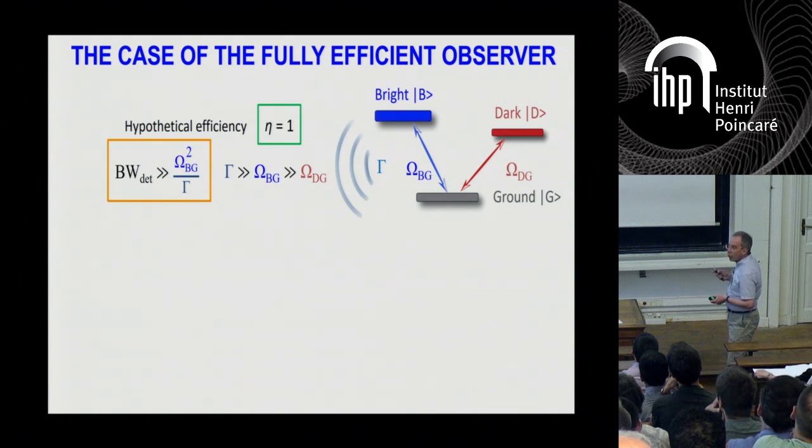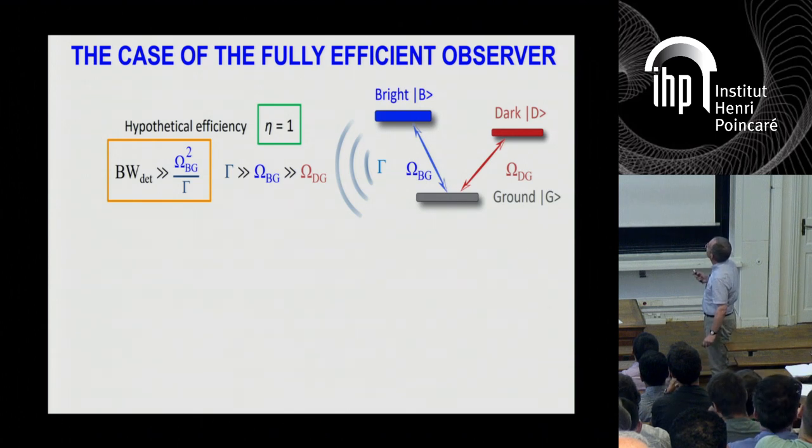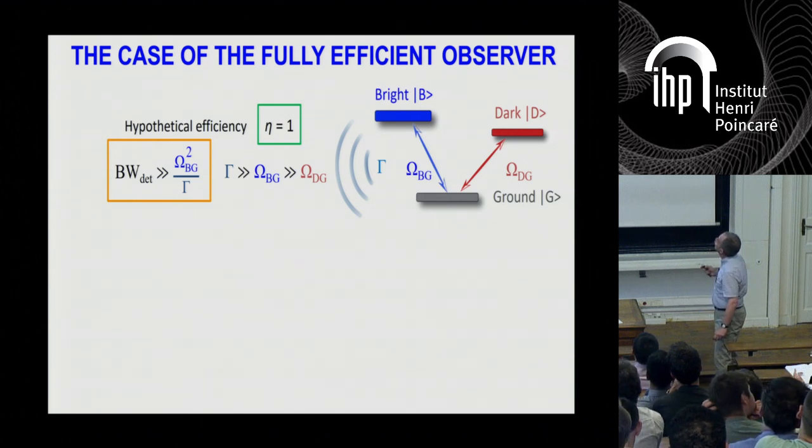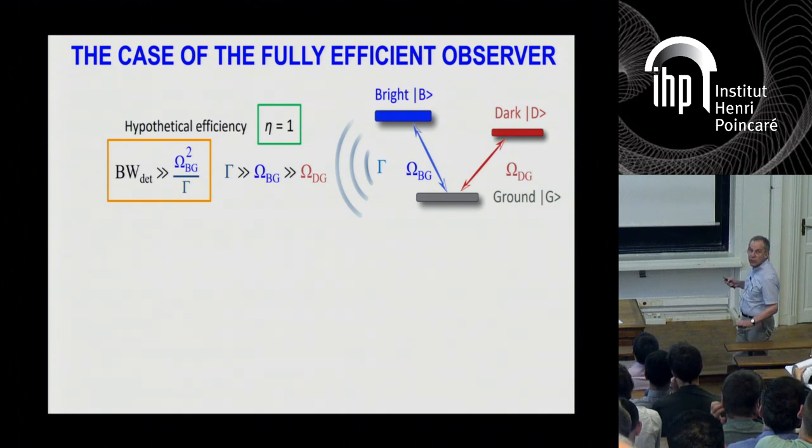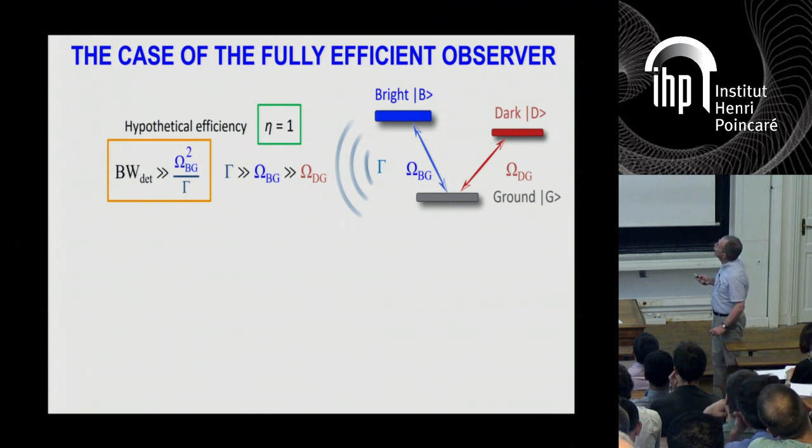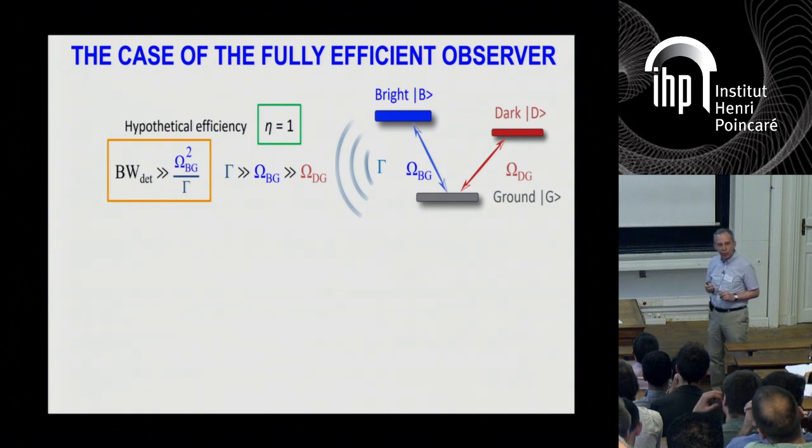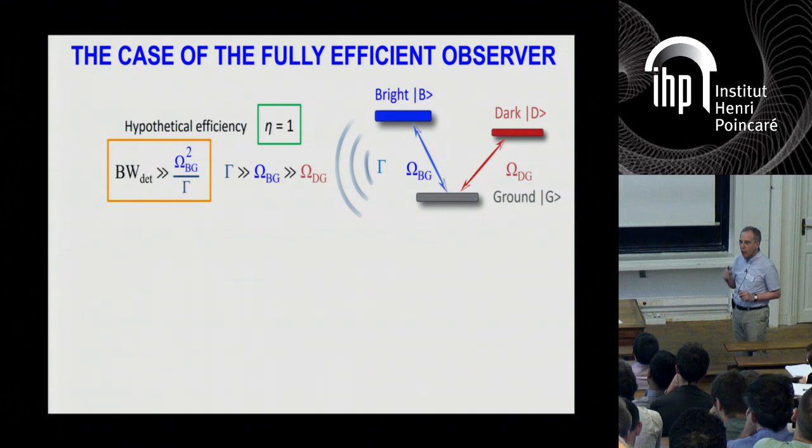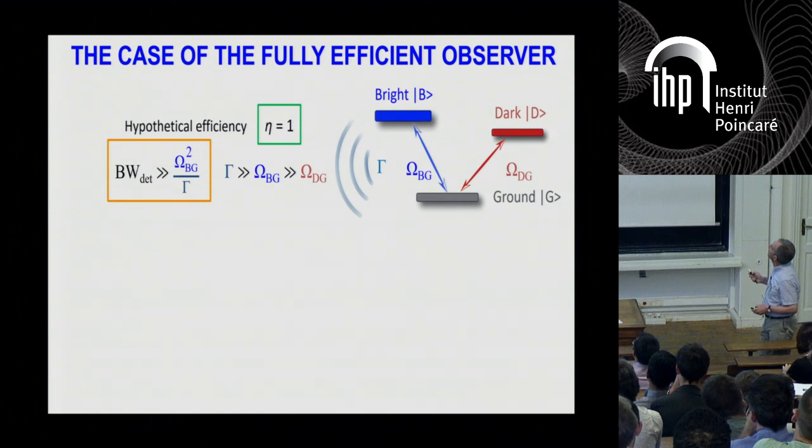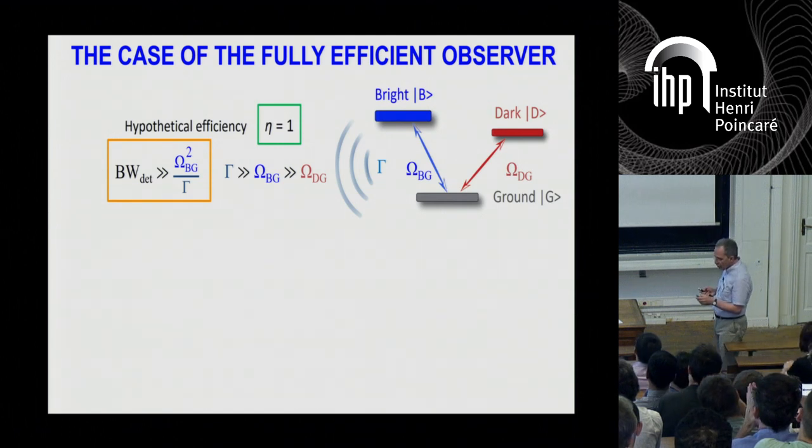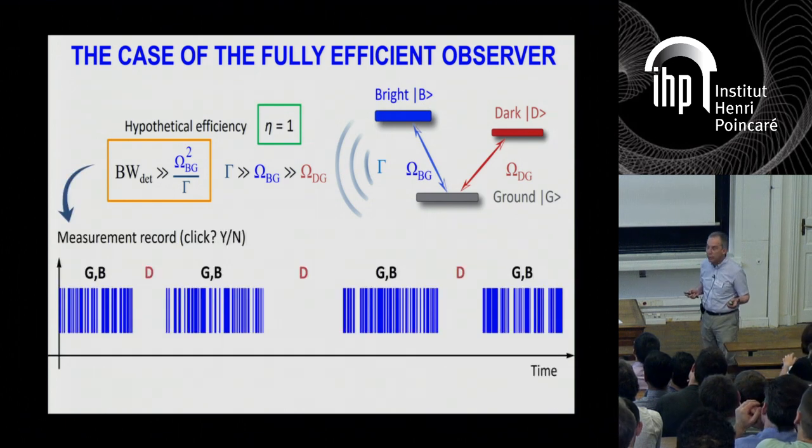And now, this leads me to the proposal of Howard Carmichael. So Howard imagined that somehow the experiment could be done with a full quantum efficiency, a fully efficient measurement of the fluorescence photon. So this is of course highly hypothetical at this point, but let's go on. You add another constraint, which is that the bandwidth of the detection of the photon is even shorter than all the time scales. So you have a very good, very close monitoring of the fluorescence, which is going to be very well time resolved compared with the other frequencies or times in the system.